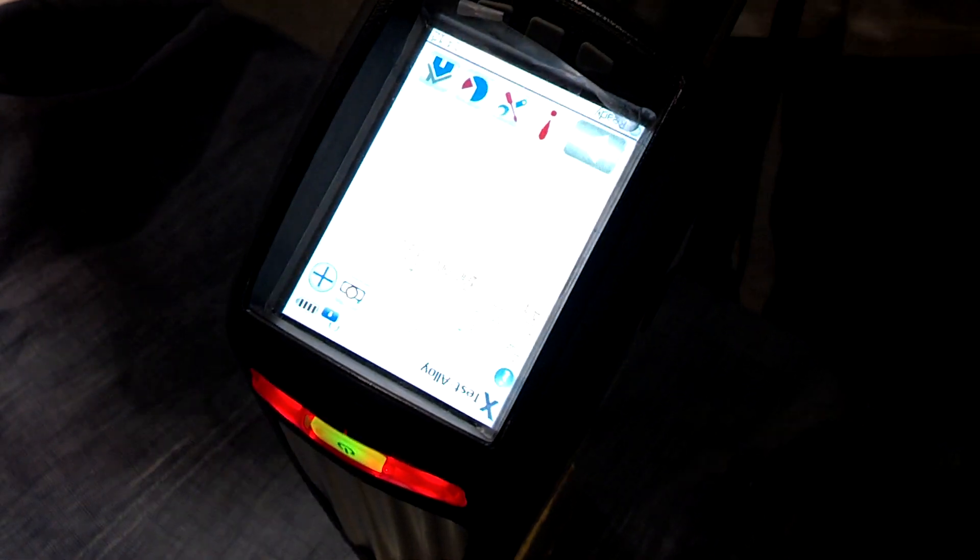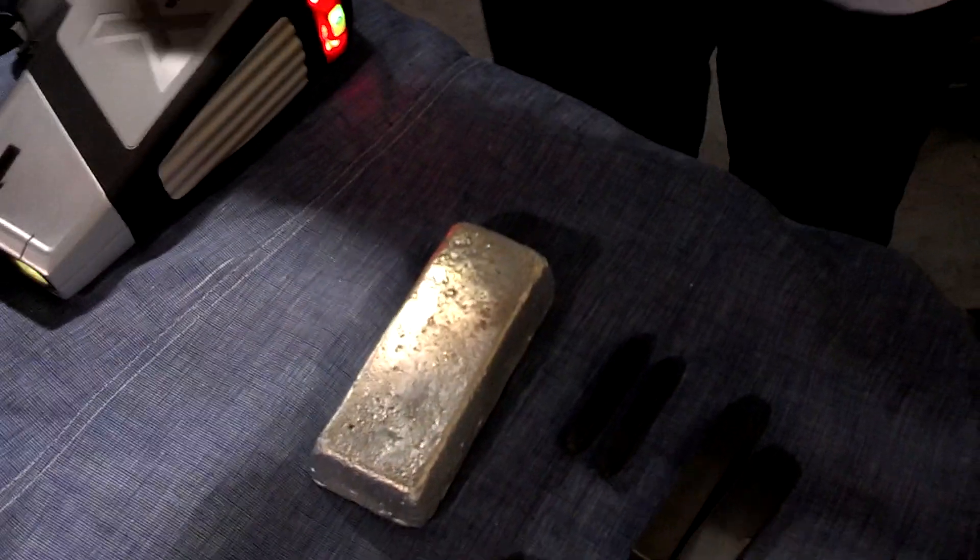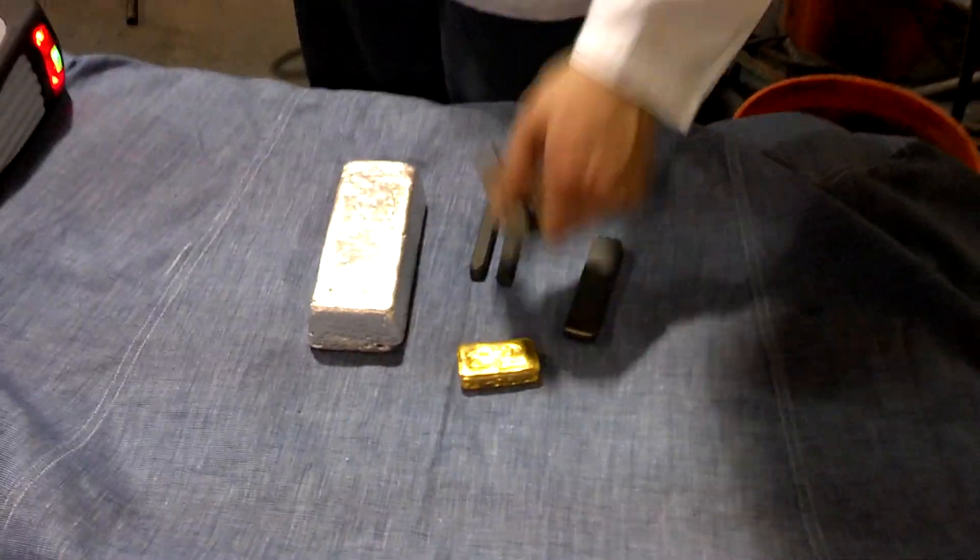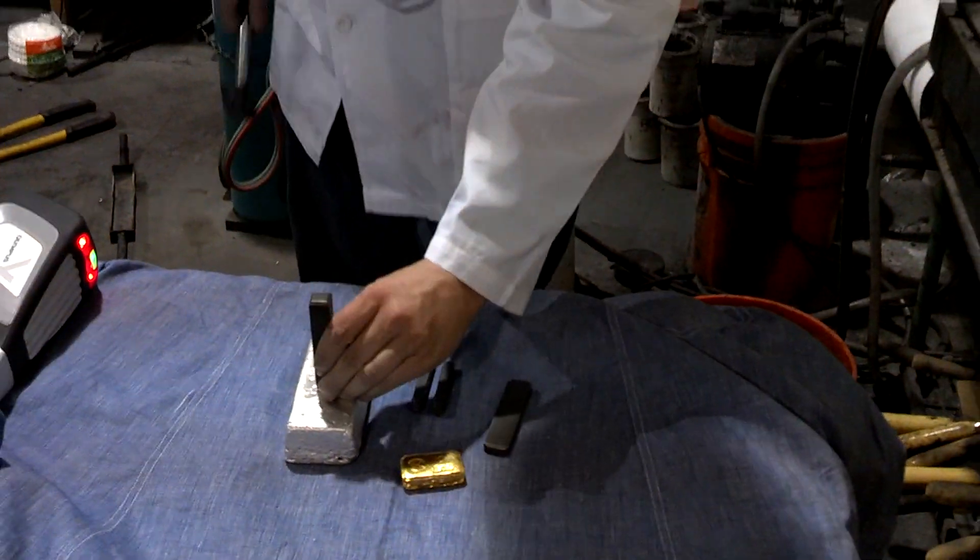So now that we know this is a hundred ounces of pure silver, we then mark it appropriately for sale. As required by law, you have to put your company logo on there.